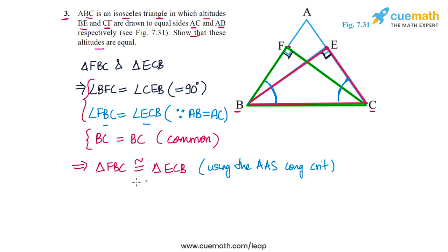So the two triangles are congruent, and this means that all their other corresponding parts are also equal, and in particular, FC is equal to EB using CPCT. And this completes our proof. FC is the altitude from C to AB, and EB is the altitude from B to AC. So these two altitudes are equal. So that is what we had to prove.